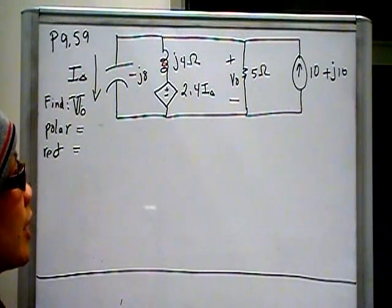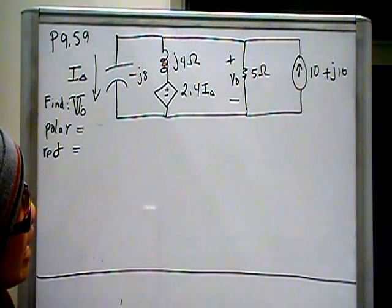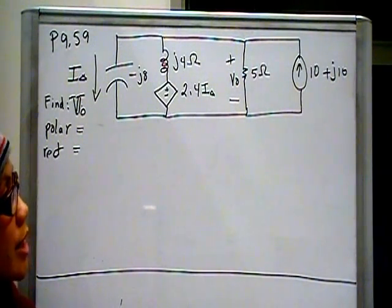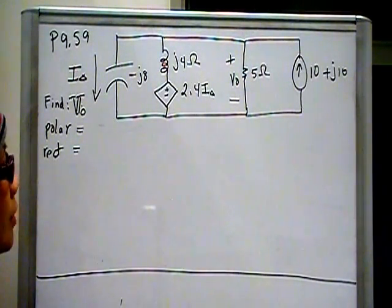That is then in parallel with a 5-ohm resistor, which is in parallel with an independent current source with value 10 plus J10. There we go.